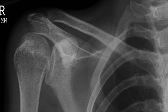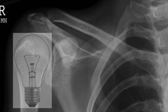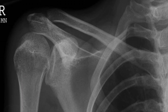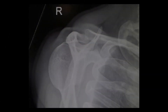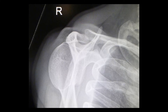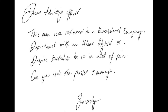It should not have been missed, but it was — a posterior shoulder dislocation. On the AP you can see the characteristic light bulb sign because of the internal rotation of the humerus. Additionally, there's a rim sign where the distance between the humeral head and the glenoid rim is greater than six millimeters. On the lateral X-ray you can easily see the humeral head posterior to the Mercedes sign, which is where the glenoid is.